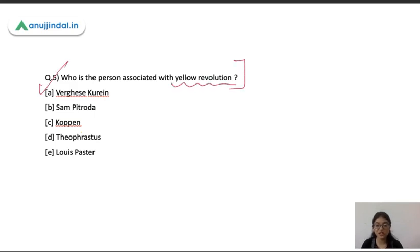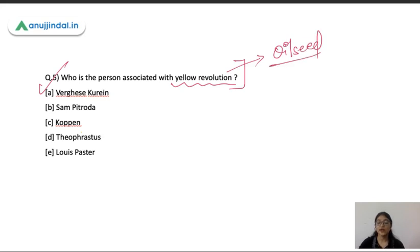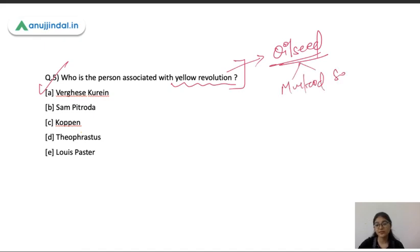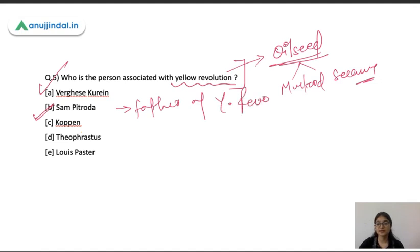The next question is: who is the person associated with the Yellow Revolution? All these revolutions are very important. The Yellow Revolution is related to oilseed production, specifically mustard and sesame. The person associated with the Yellow Revolution is Sam Pitroda — he is also known as the father of the Yellow Revolution. Remember this.